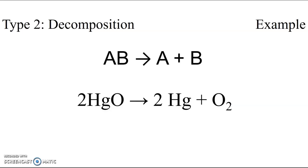An example of this is the decomposition of mercury two oxide into the elements mercury and oxygen gas. Here our compound is composed of the elements mercury and oxygen, and then on the product side those elements are listed as being separate substances.